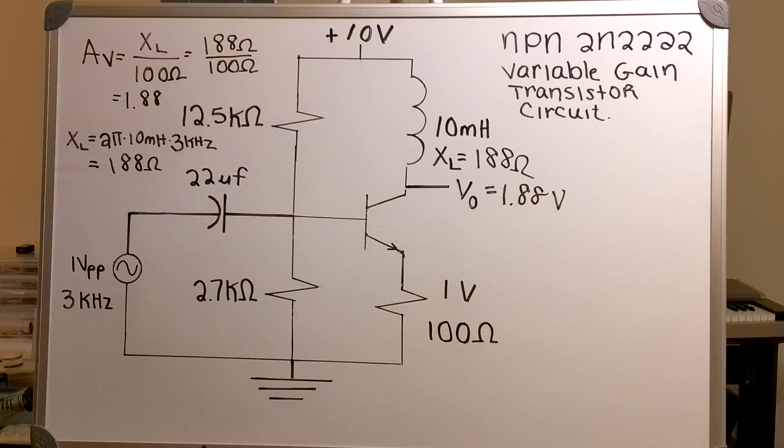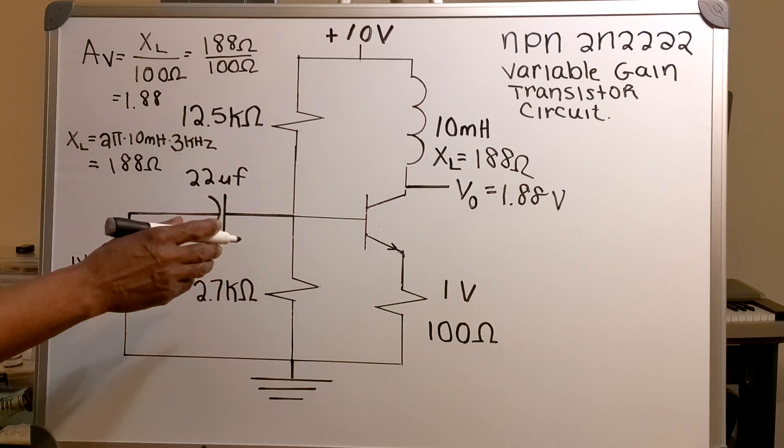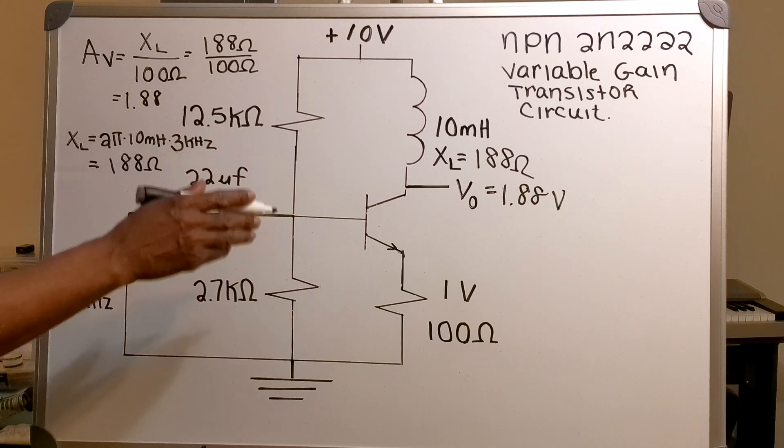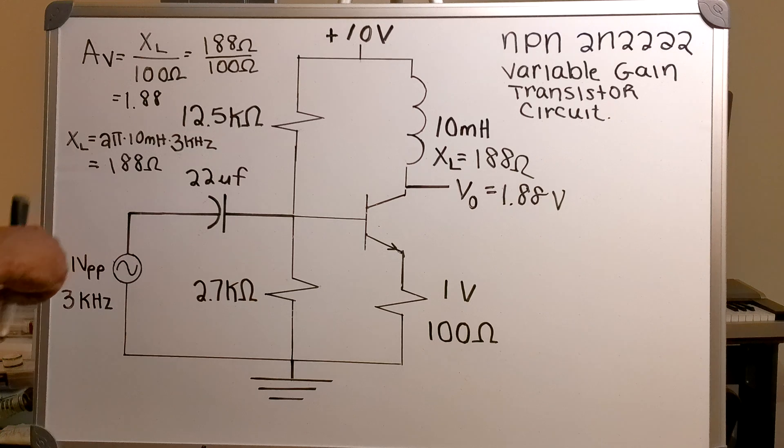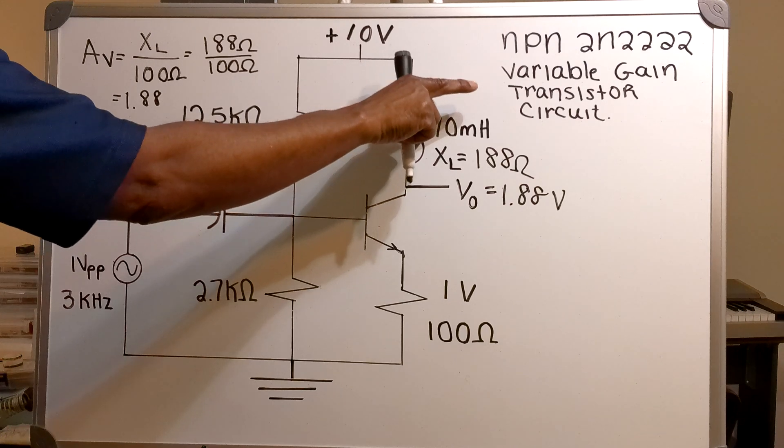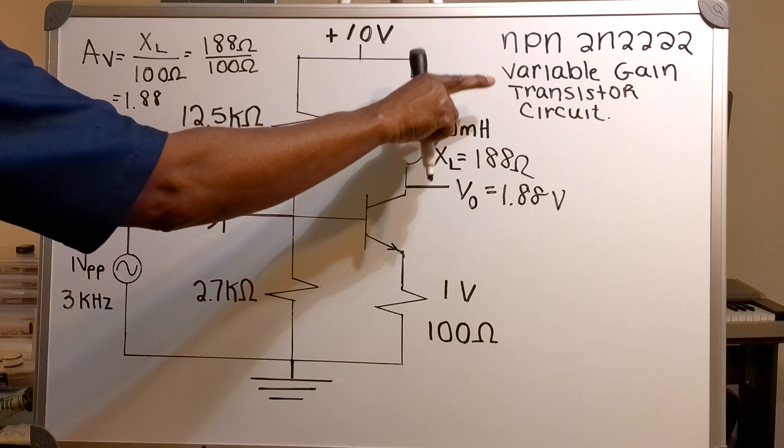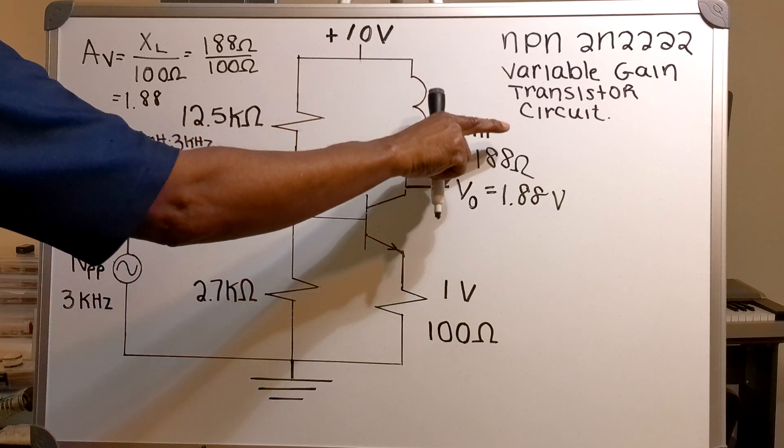So you see here that the output voltage will change if you change the frequency, if you change the input frequency. And that is why I call it the variable gain transistor circuit.